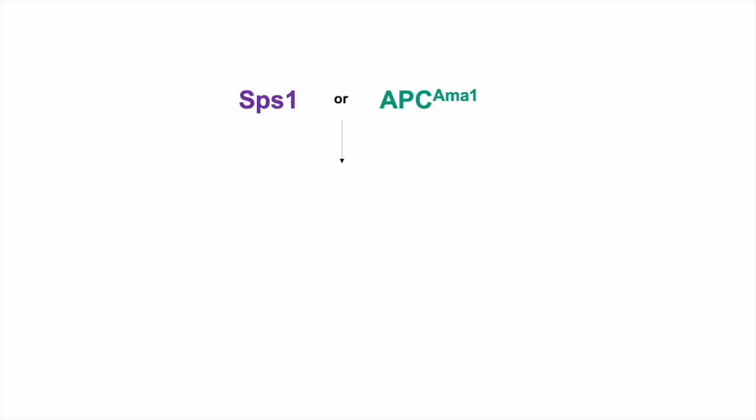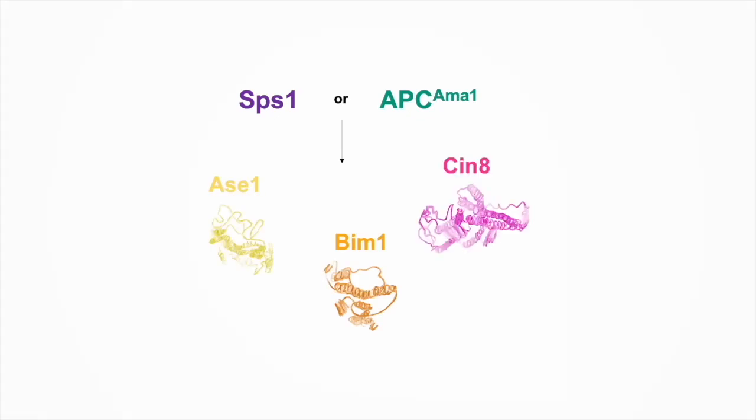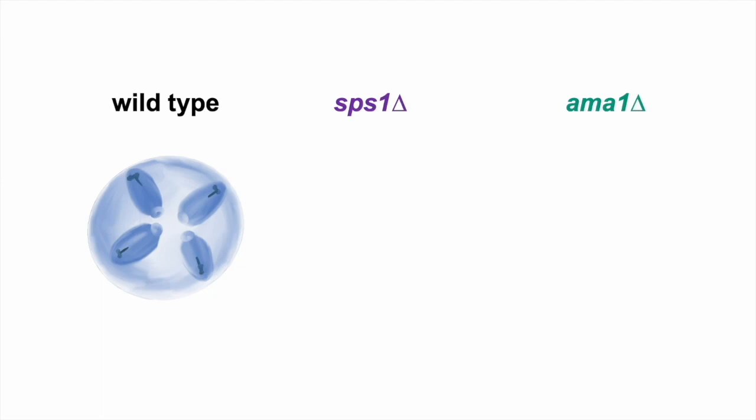We examined three known microtubule binding proteins that act in spindle disassembly during mitosis. We examined BIM1, ACE1, and CIN8. All of these proteins are removed from the spindle when disassembly proceeds normally.